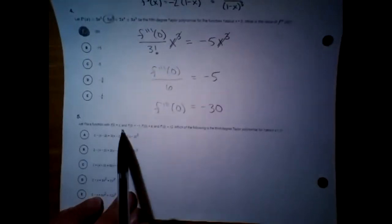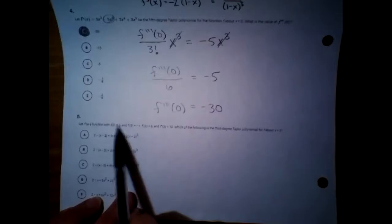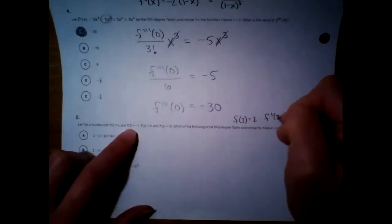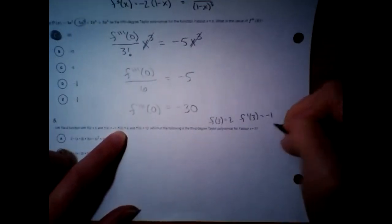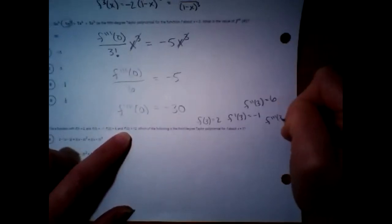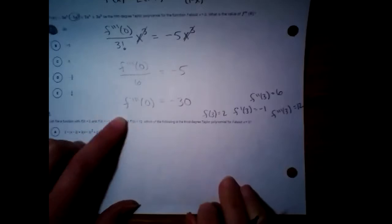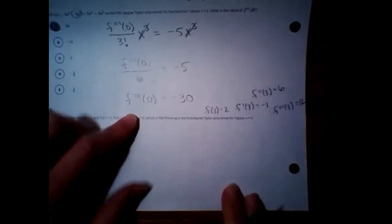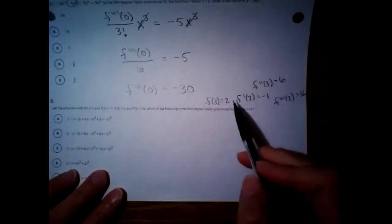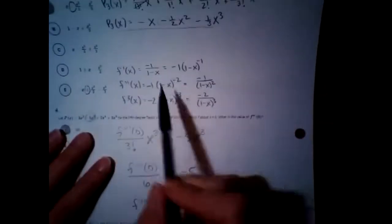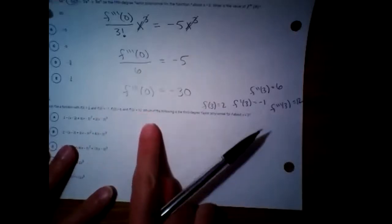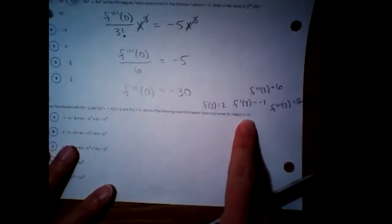Last problem. They give us: f(3) = 2, f′(3) = -1, second derivative at 3 is 6, and third derivative at 3 is 12. They give you all these derivative values so you don't have to do all that work. Which of the following is the third degree Taylor polynomial for f about 3?